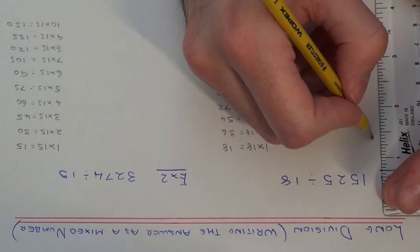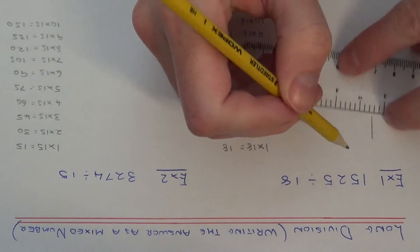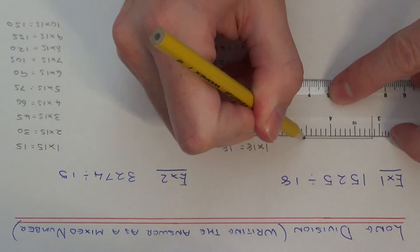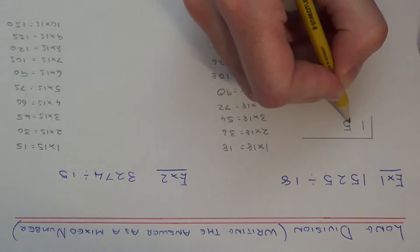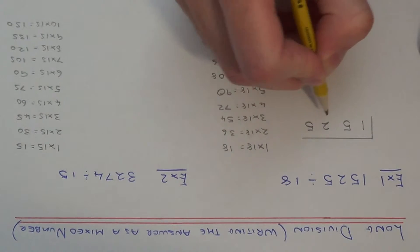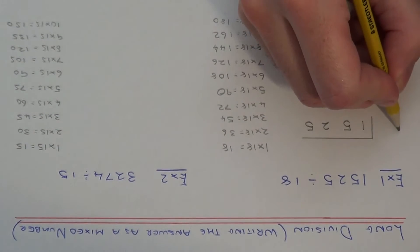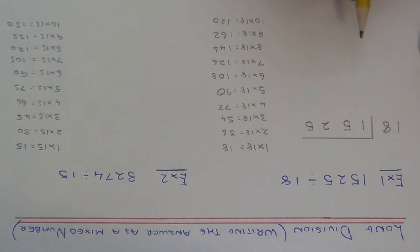First of all, set your division out in the normal way with a vertical line and a horizontal line. Write the 1525 underneath the horizontal line and put the 18 at the start. 1 divided by 18 we can't do, so we need to look at 15 divided by 18. Again we can't do that, so we need to do 152 divided by 18.